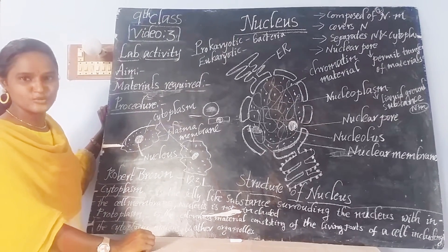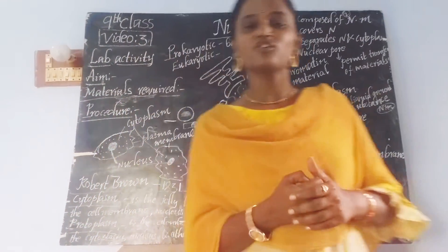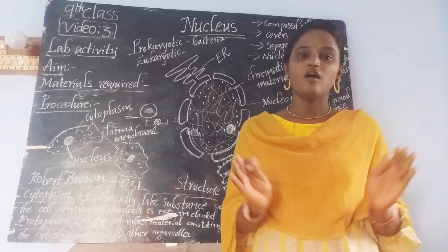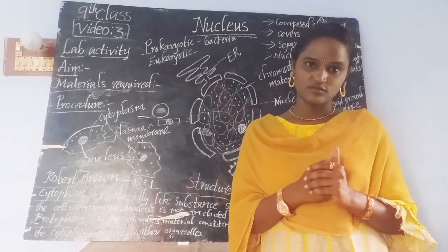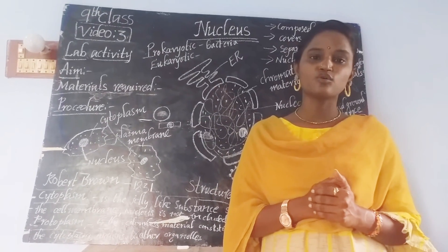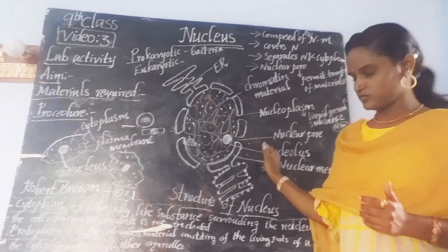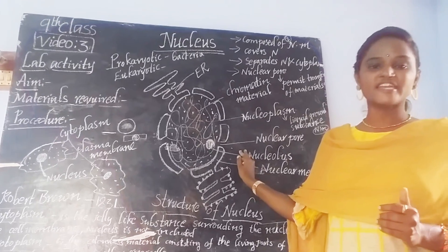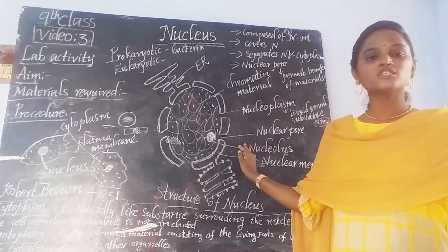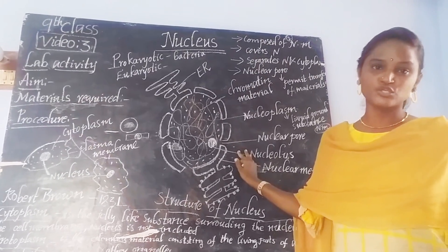Now we are going to discuss about the nucleus. We already discussed about the main function of the nucleus. The main function of the nucleus is to control all the functions of the cell organelles — that's why we call it the controlling room of the cell. It is also called the storage home of chromatin material or genetic material, because it stores genetic information inside.